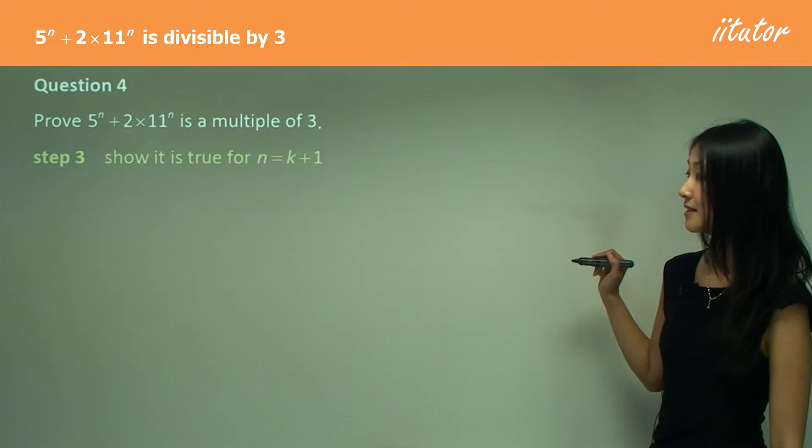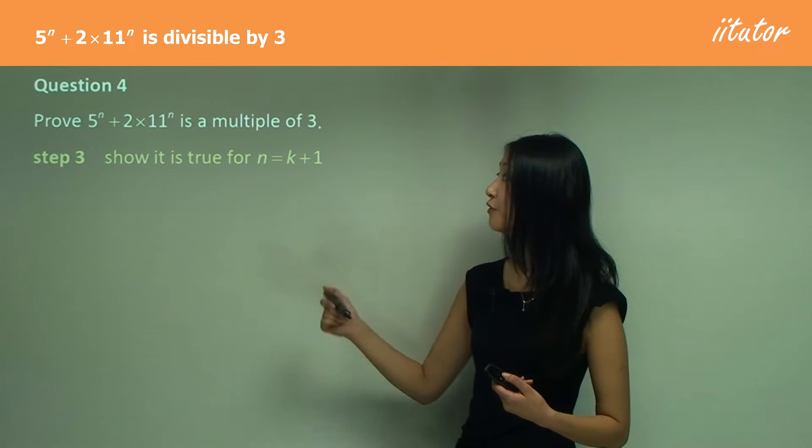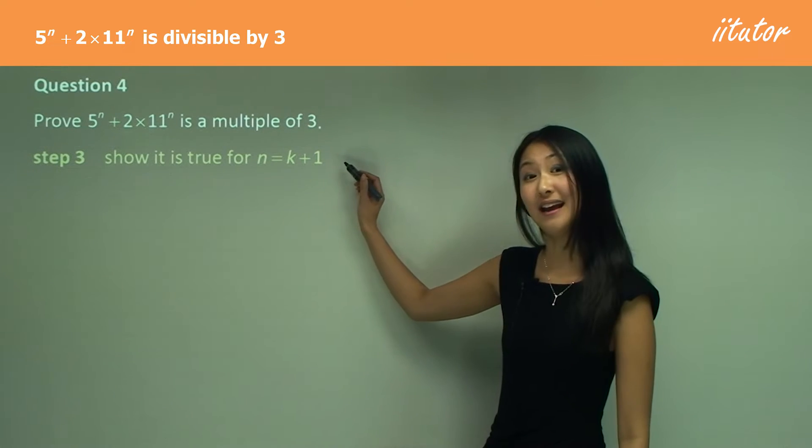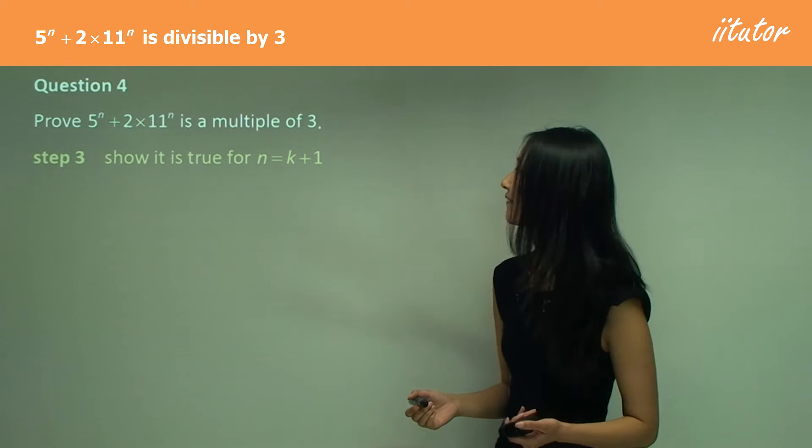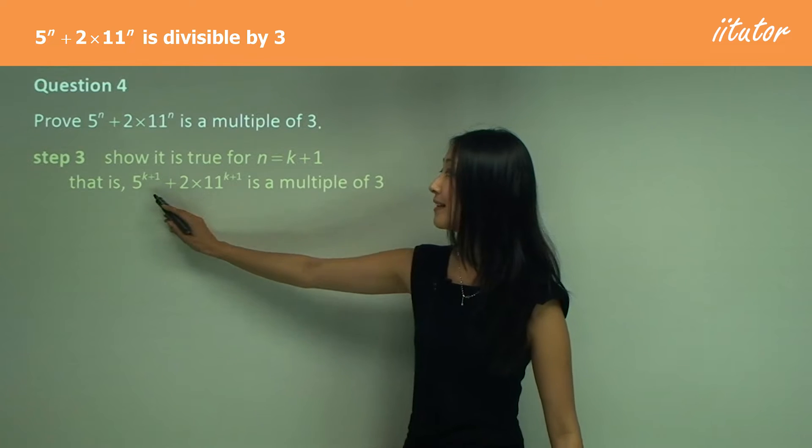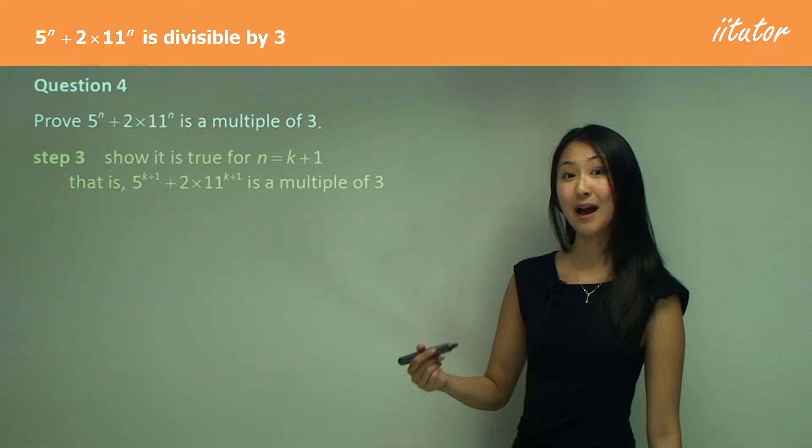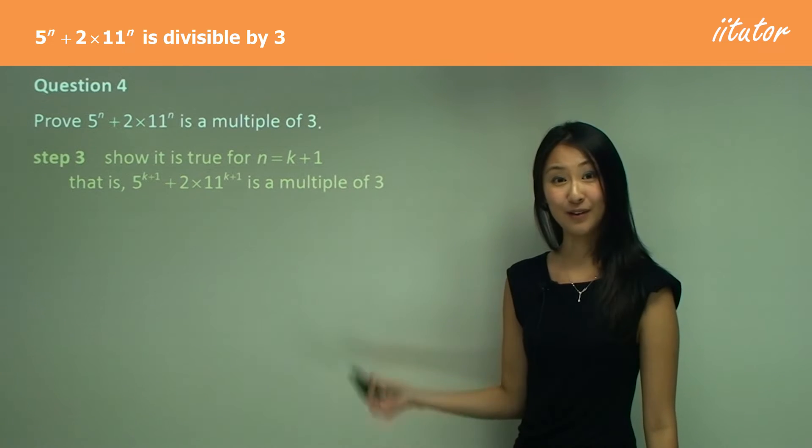So now using this as an assumption, we move on to step three, which is where we show or prove that this is true for n equals k plus one. So substituting in k plus one to here and here, we want to prove that this is a multiple of three. So that is, we want to be able to factorize out a three at the end of it.